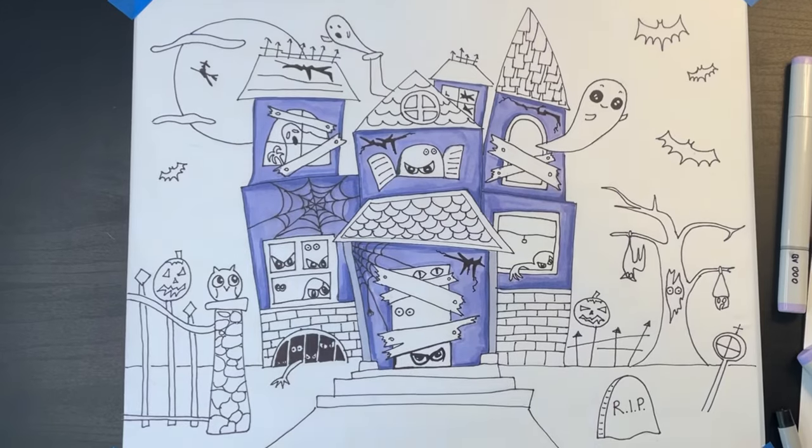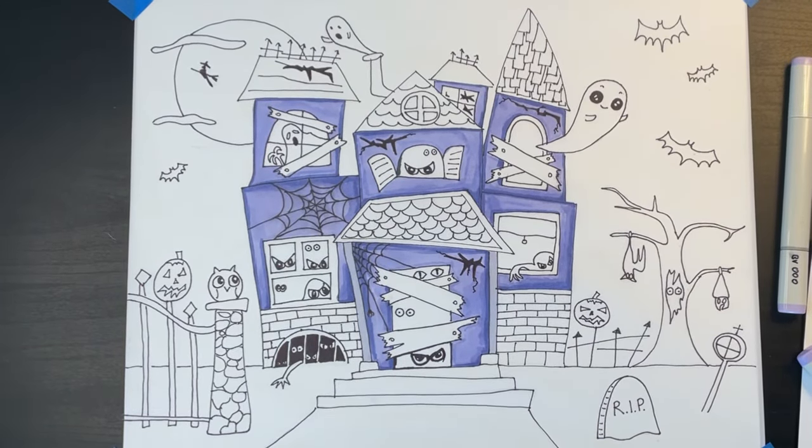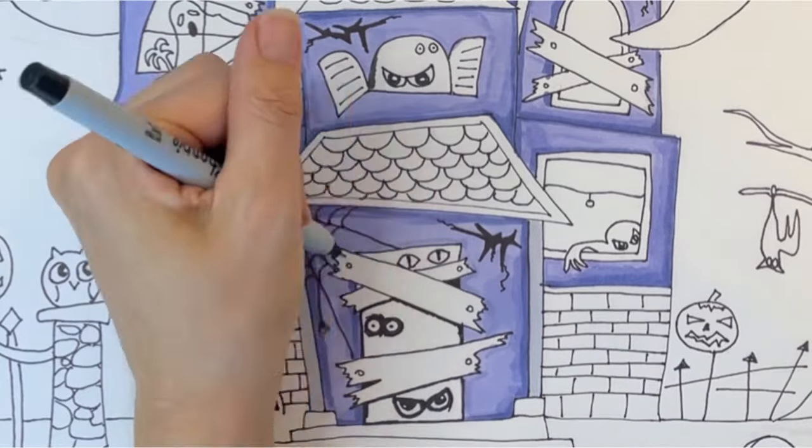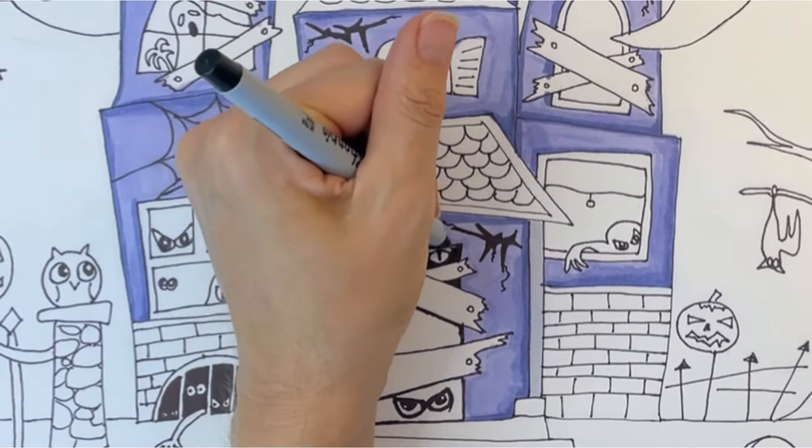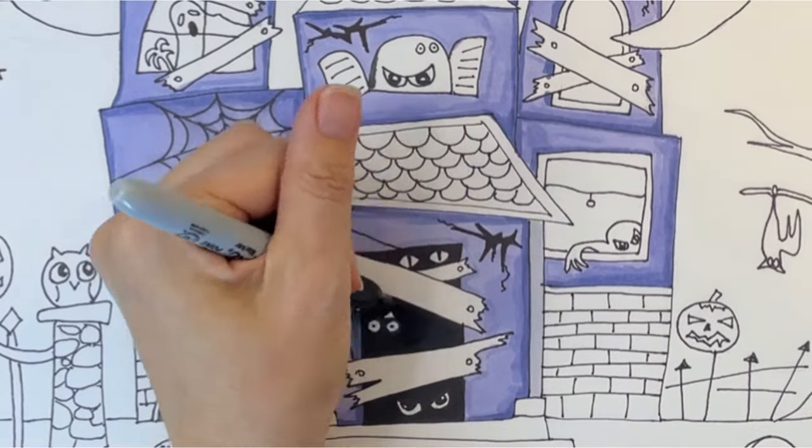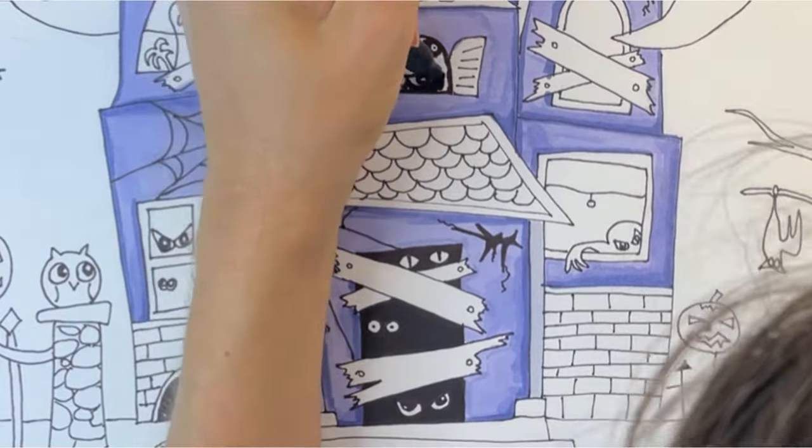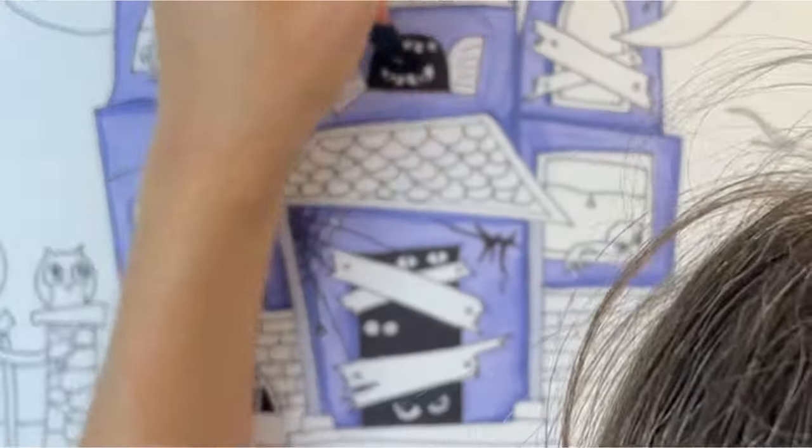Now I'm ready to add color. I decided to color my house purple because that's a nice color for Halloween. Okay it feels important to show you this. There's two great ways that you can color in your windows. The first option is to color everything in black except for the eyeballs that you've drawn. This will look super cool.